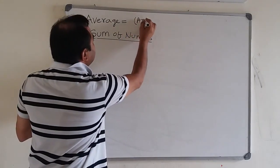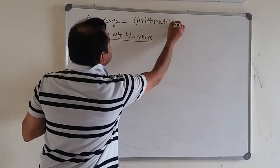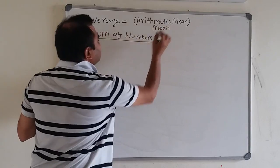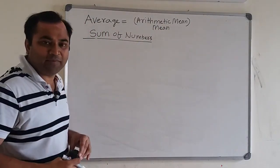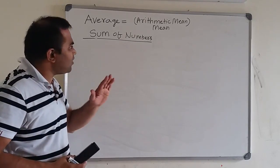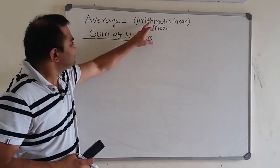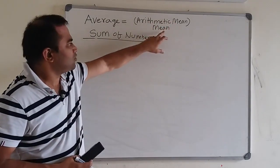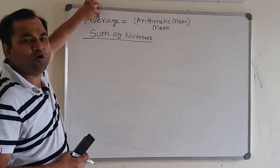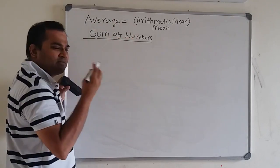Average is also called arithmetic mean, or simply mean. There are various kinds of means like arithmetic mean, harmonic mean, and geometric mean, but they are not all called average. Among the various kinds of means, it is the arithmetic mean, also simply called mean, which is ultimately referred to as average.